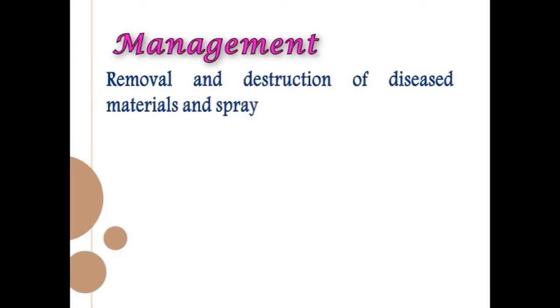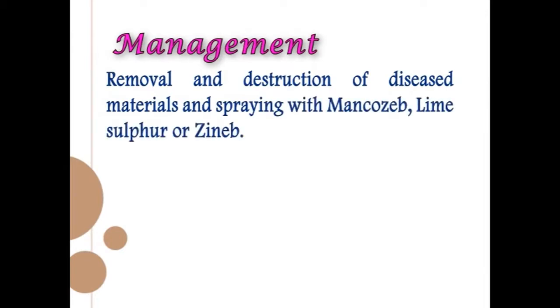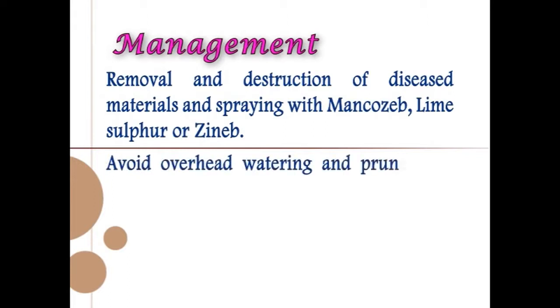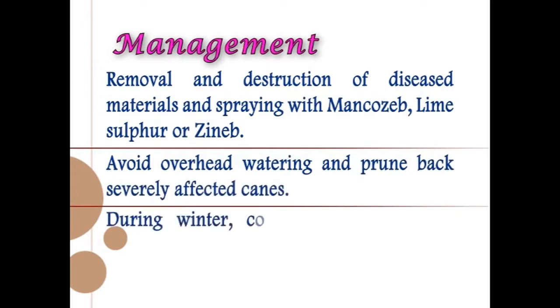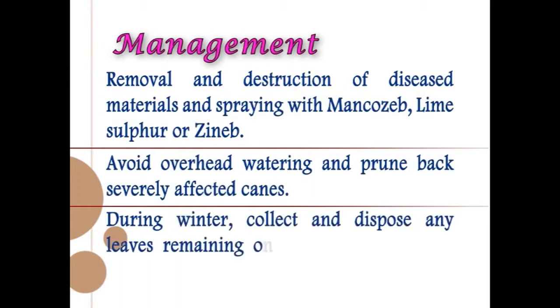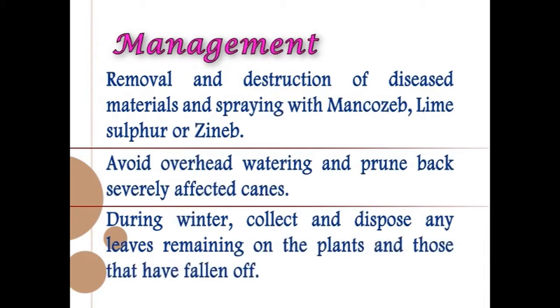For management of rust, remove and destroy diseased materials and spray with mancozeb, lime sulfur, or zineb. Avoid overhead watering and prune back severely affected canes. During winter, collect and dispose of any leaves remaining on the plants and those that have fallen off.